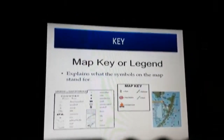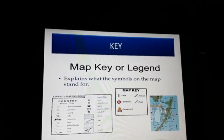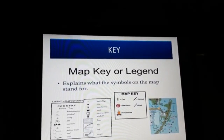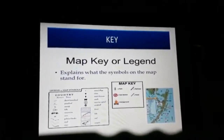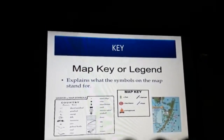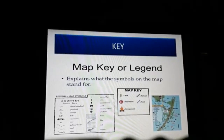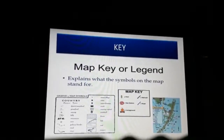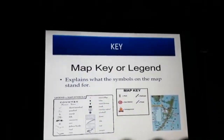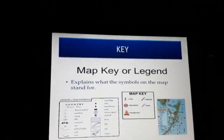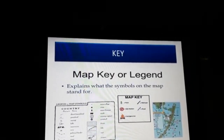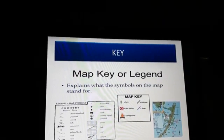Next, we learn about the map key, also called the legend. A key is used in certain maps only. It explains what each symbol or color on a map represents. The key of the map is also called the legend of the map.